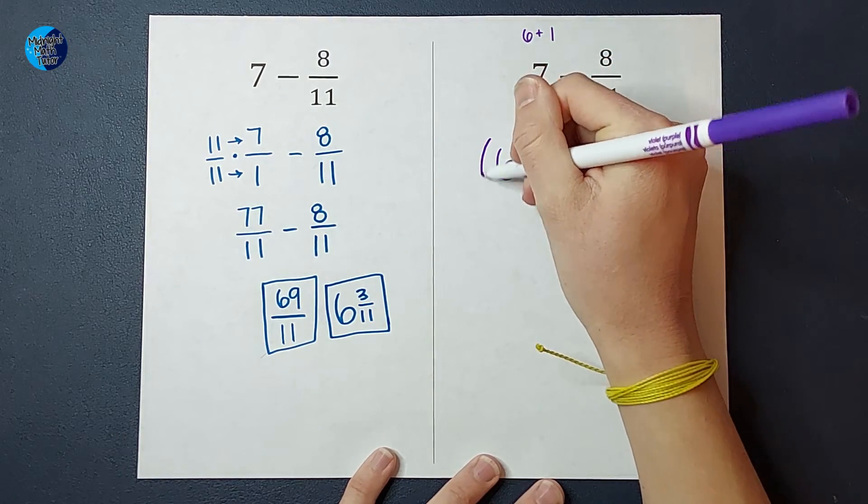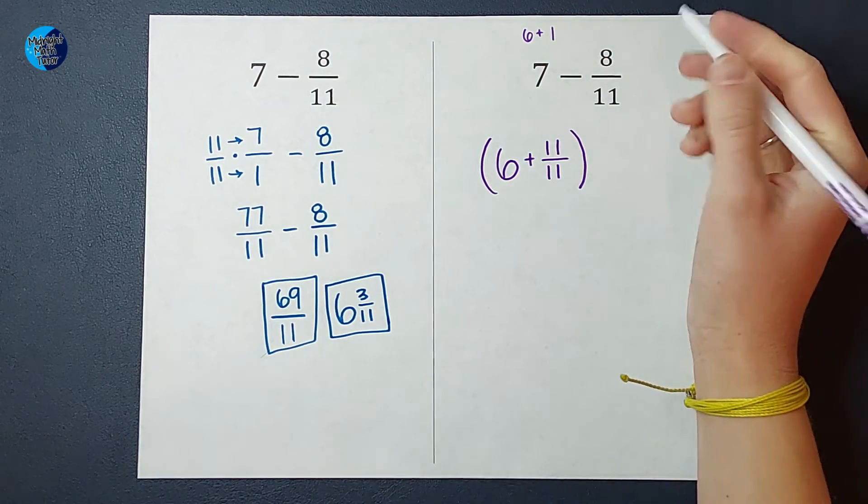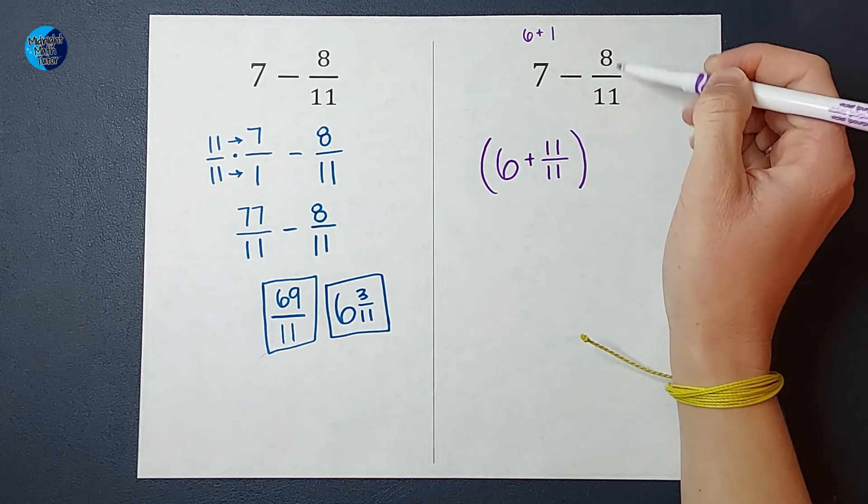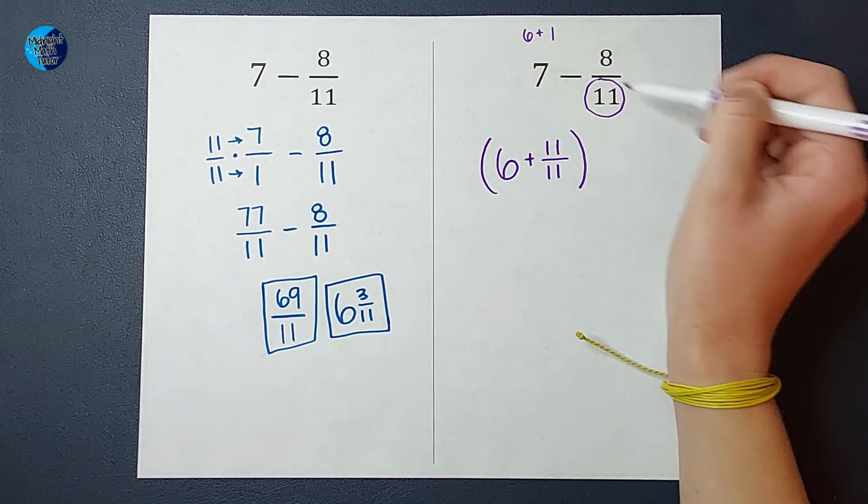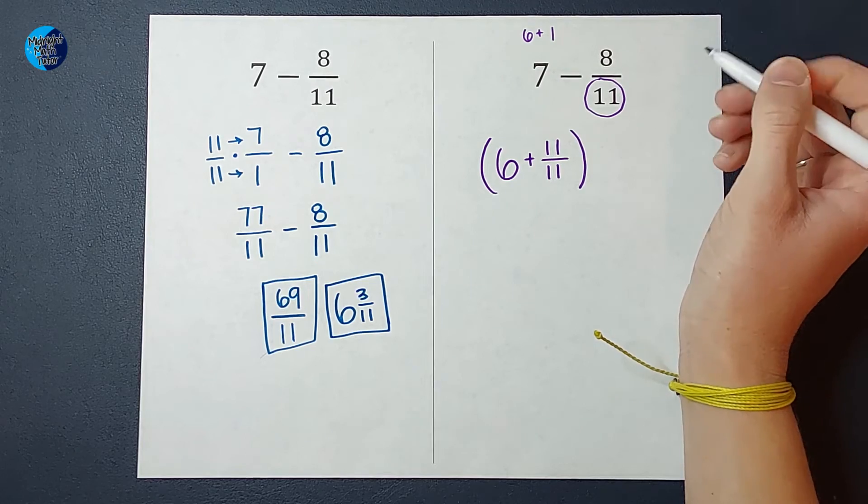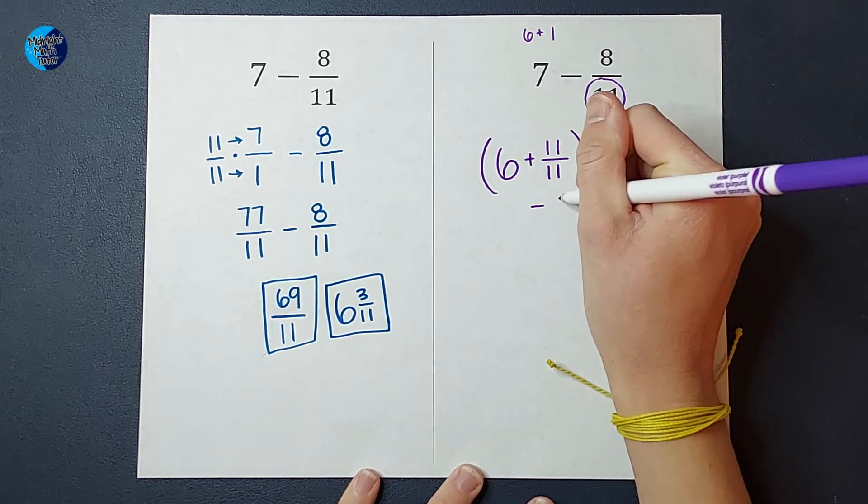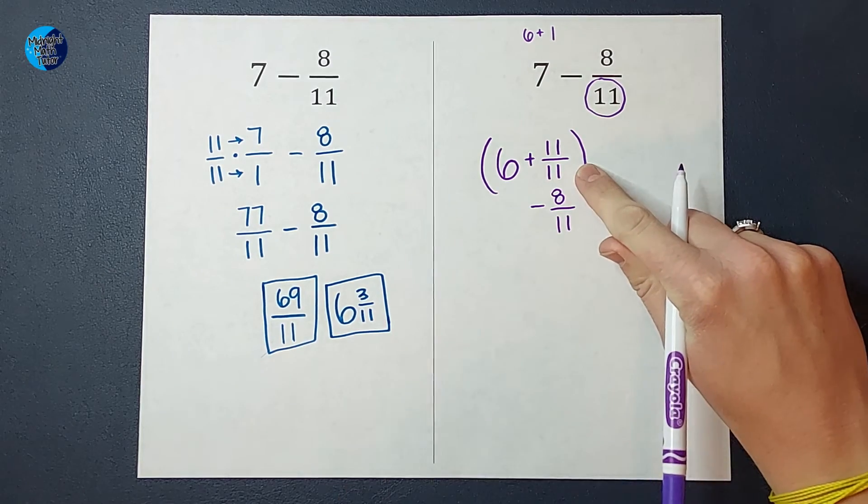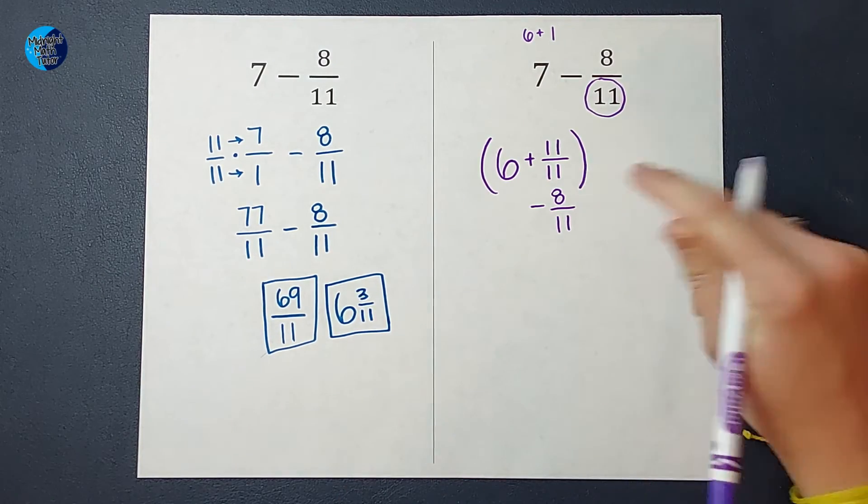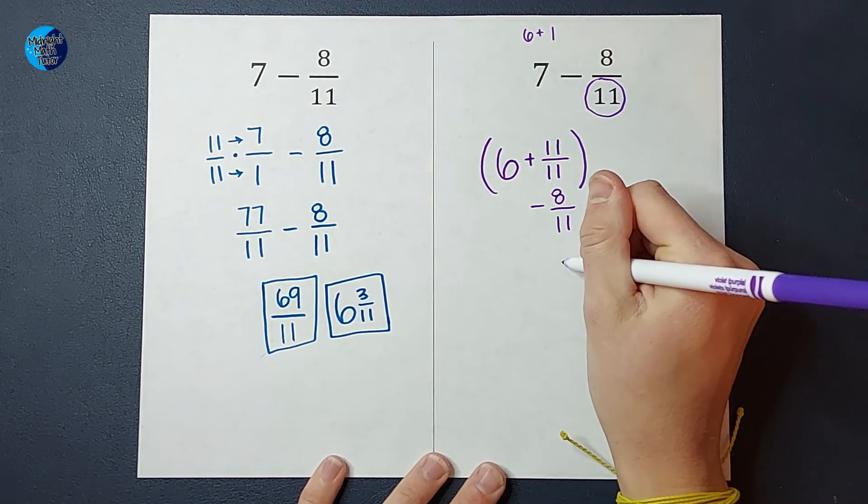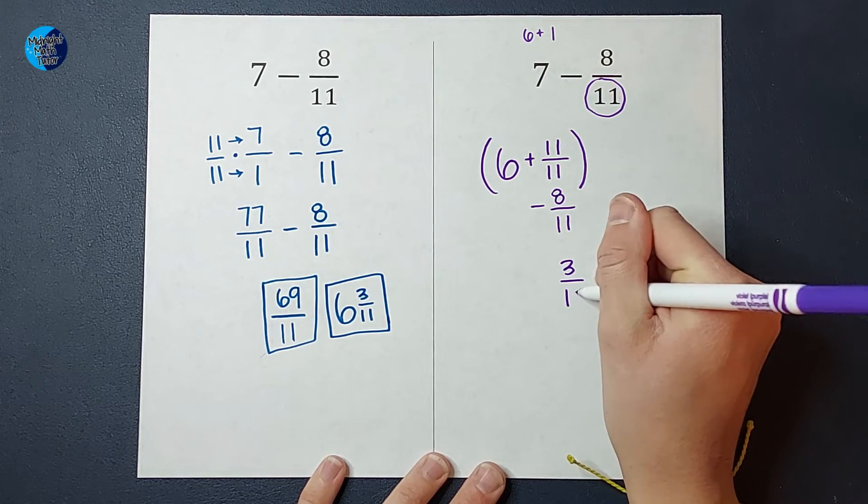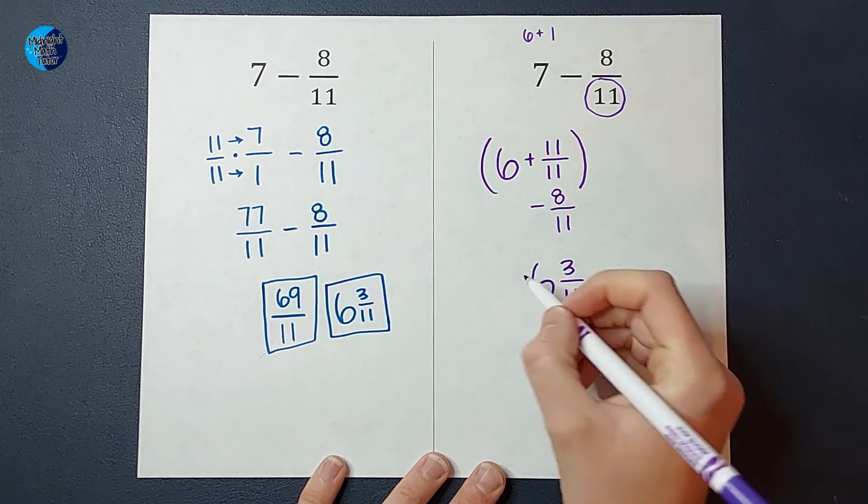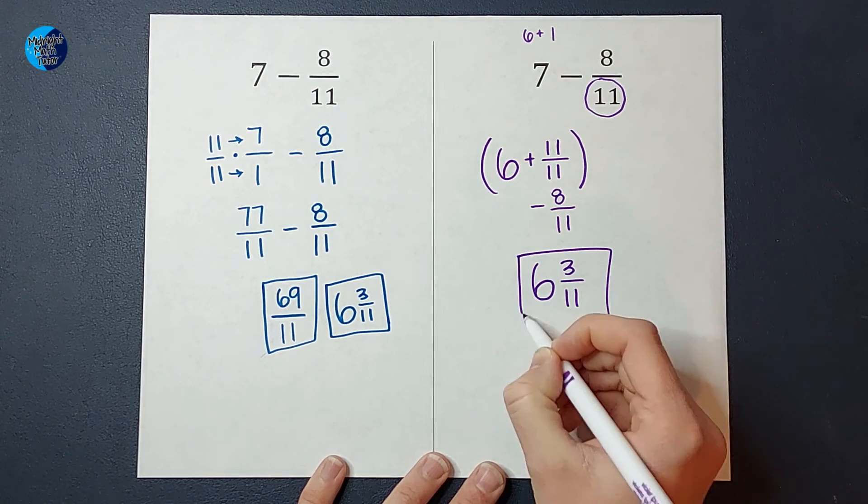So writing it like this is going to help us solve this. Then the reason I picked 11 over 11 is because this guy's denominator is 11. So now I can subtract eight elevenths from 11 elevenths. And that leaves me with three elevenths. And then I still have that six there. Look at that. There is that answer.